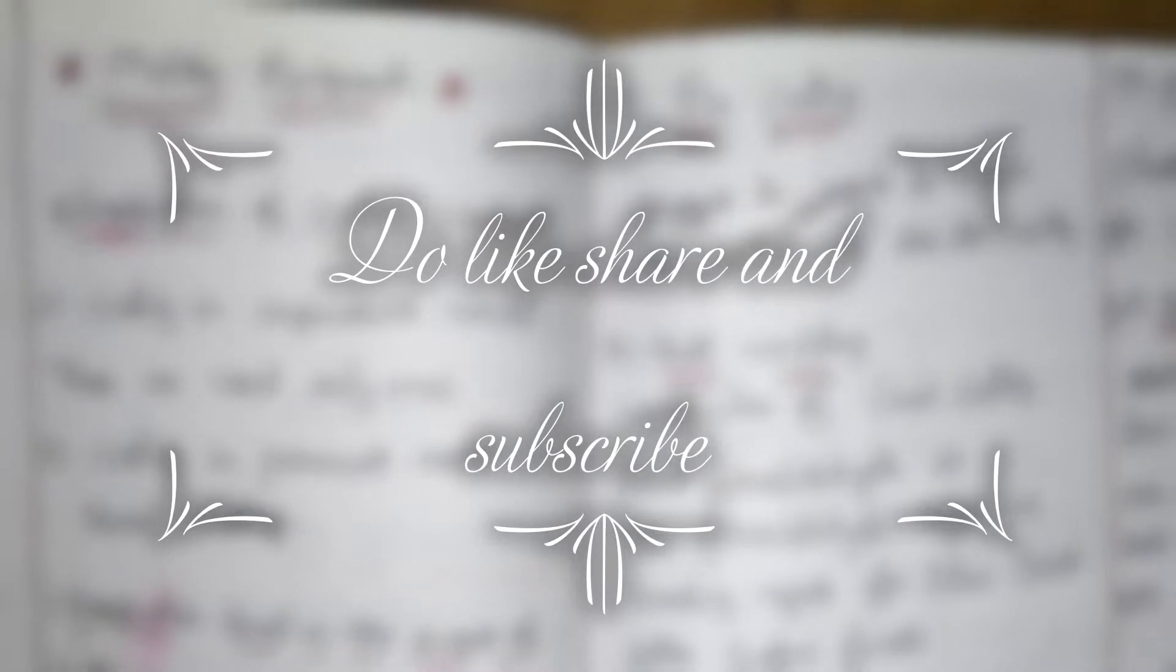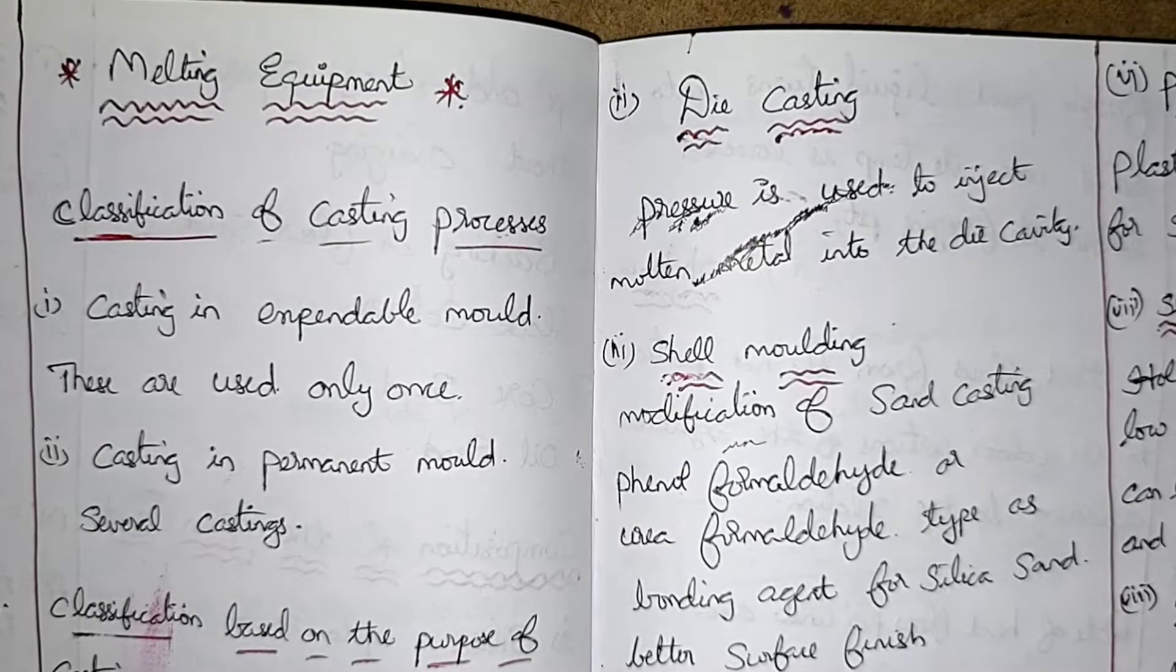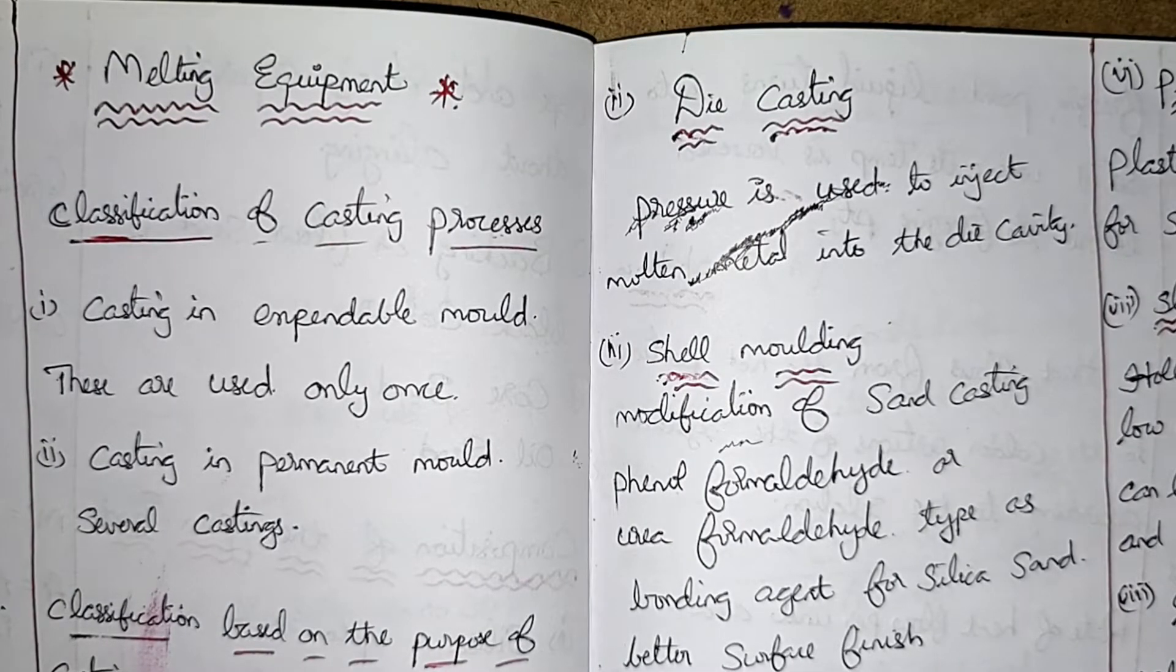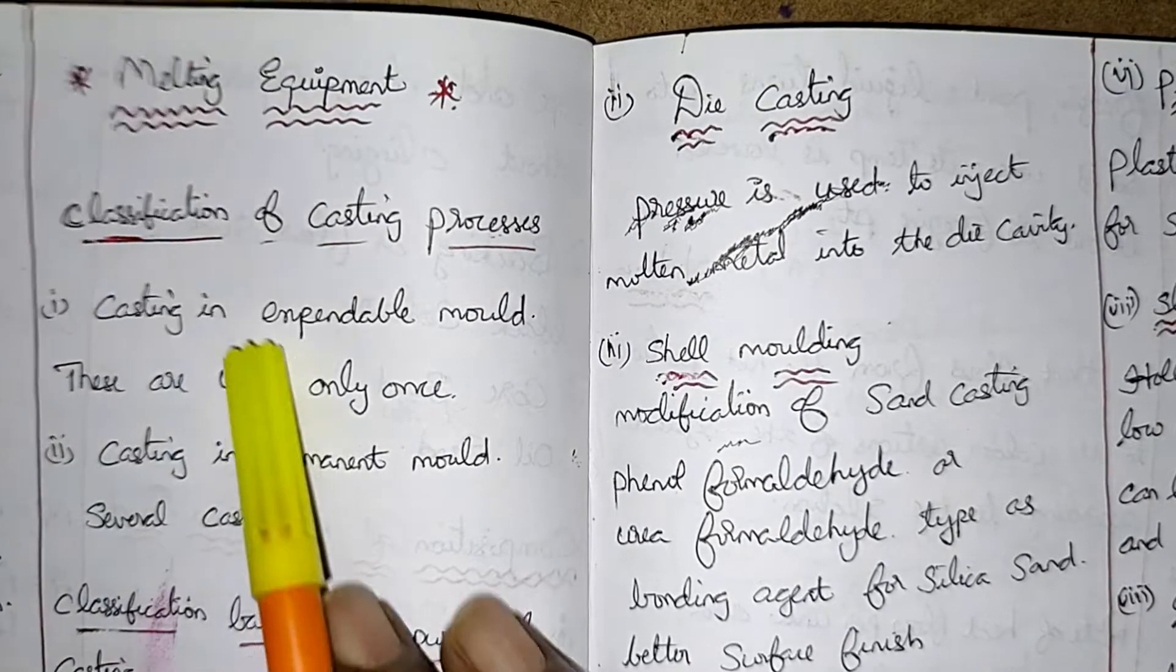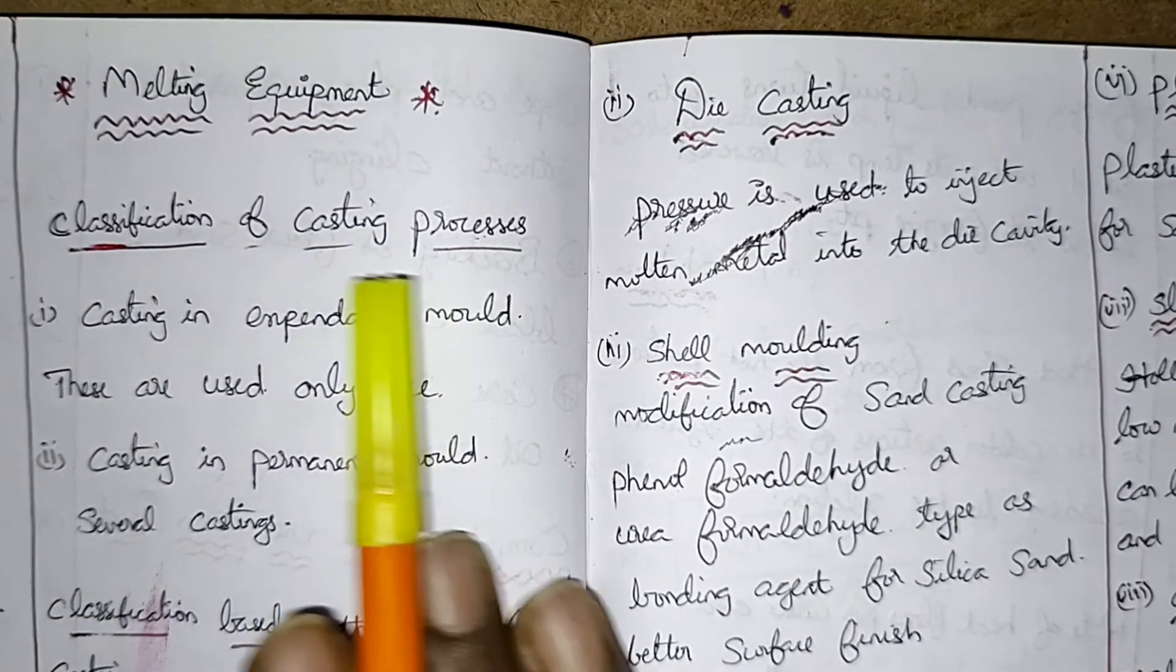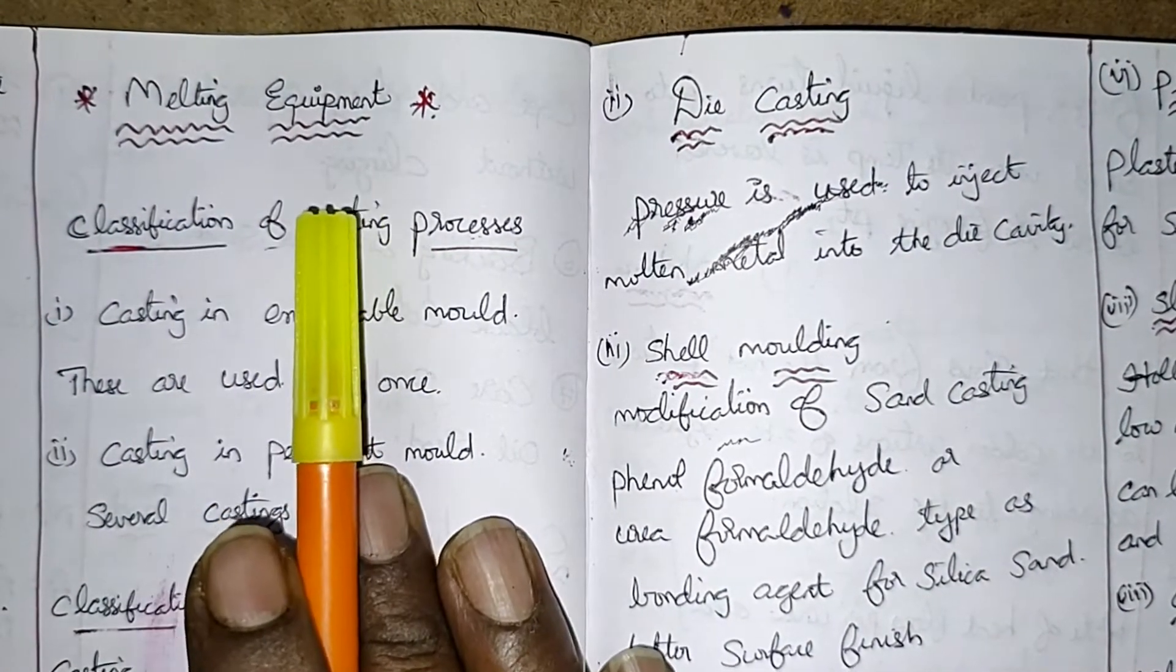Today's class in our channel we are going to discuss production technology subject. So in this subject, the topic is classification of casting processes coming under melting equipment.